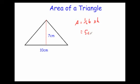So that's 5 centimeters times the height, which is 7 centimeters — the perpendicular height, meaning straight up from the base to the highest point of the triangle. So we do 5 times 7, which is equal to 35 centimeters squared. The area of this triangle is 35 centimeters squared.